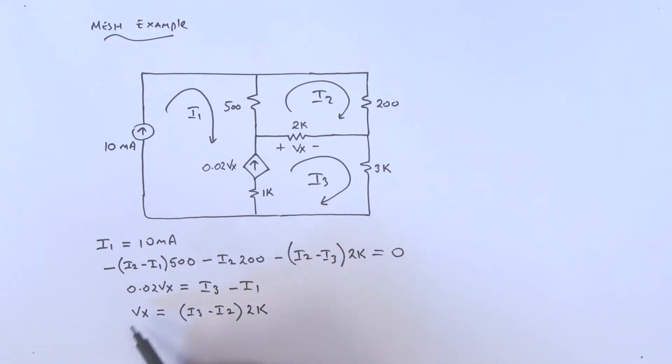I know Vx. So as a final step, I could actually put that Vx into there. I could simply write this down now as 0.02, open up a bracket, this is i3 minus i2, close the bracket, times 2k, and that's going to be equal to i3 minus i1.